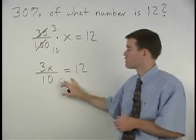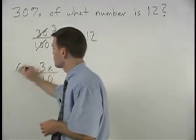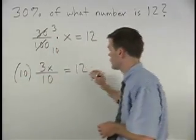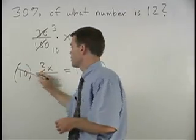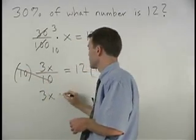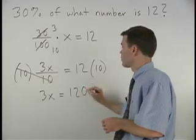To get rid of the fraction, we multiply both sides of the equation by 10. And we have 3x equals 120.